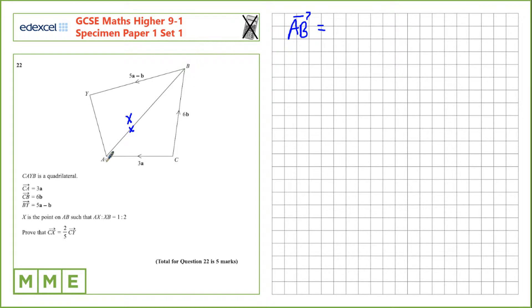So AB, we find by going from A to B. We're going to have to go in the reverse direction from A to C, that's negative 3a, and then from C to B, which is 6b. If we want AX, we know that this is split in the ratio 1 to 2, so this is a third of the entire length. That's one-third of the length from A to B, which we just worked out. A third of 3 is 1 and a third of 6 is 2, so minus a plus 2b.